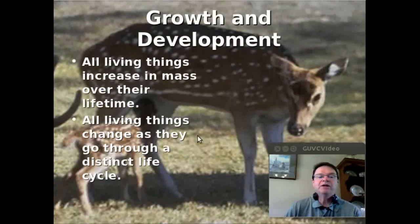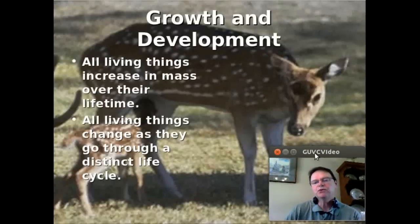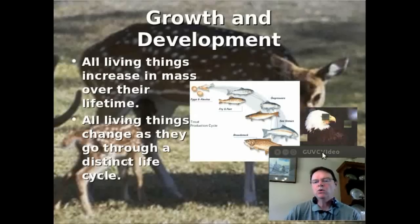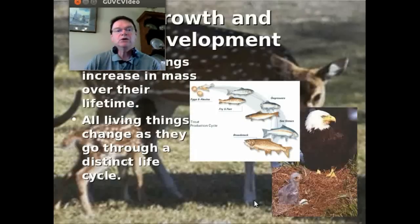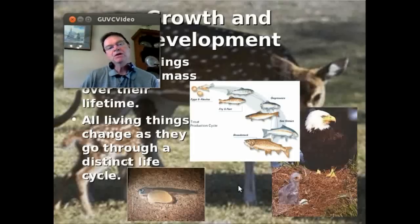Living things also grow and develop. They get larger in mass as they go through their life cycle, and they change in distinct patterns that we can see — you've probably heard of metamorphosis before. All living things produce some sort of change over the course of their lifetime, like these trout in the background, or like this little fledgling eagle. When eagles come out of the egg, they're not able to jump out of the nest and fly away — they have to mature. So living things grow and develop over the course of their lifetime.